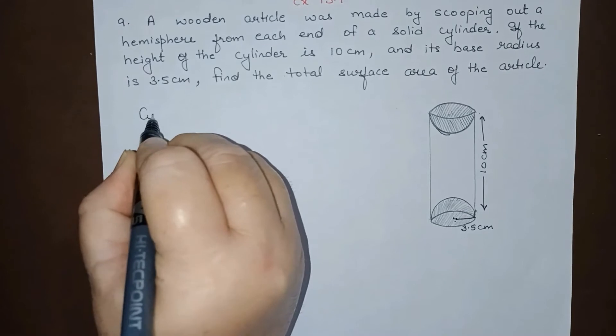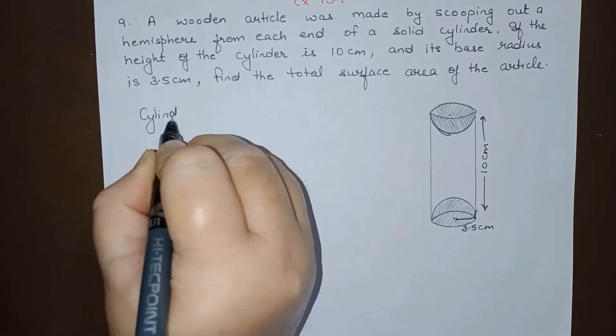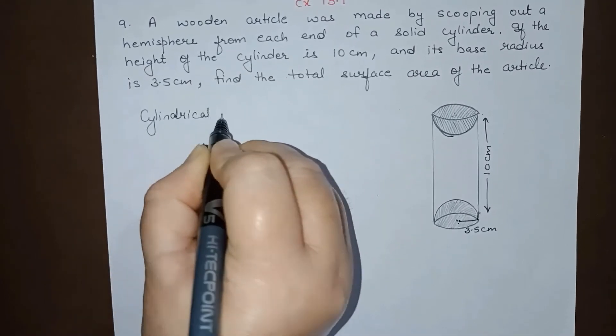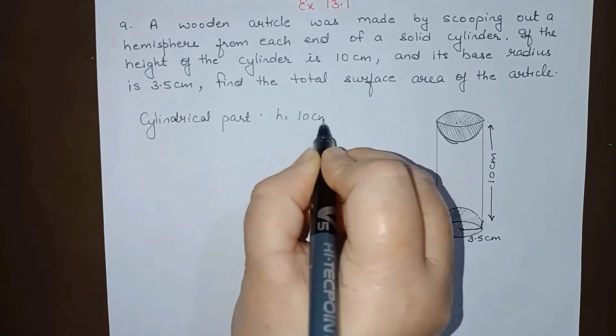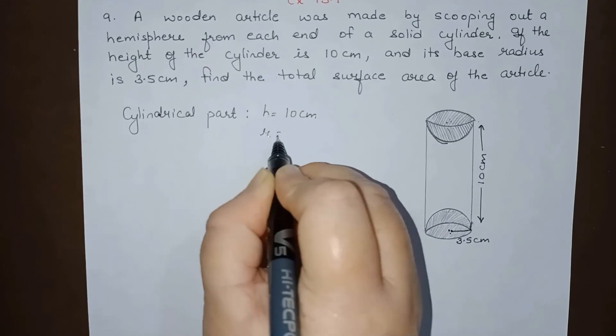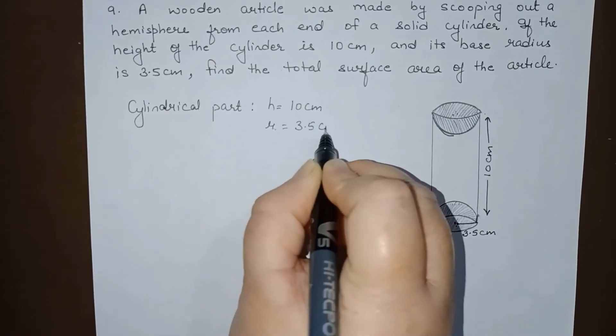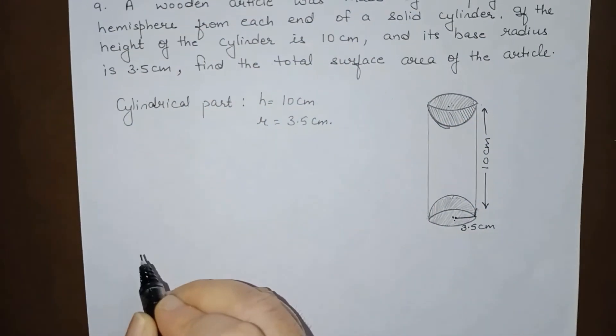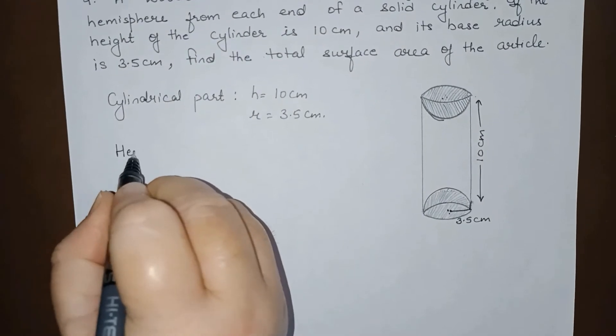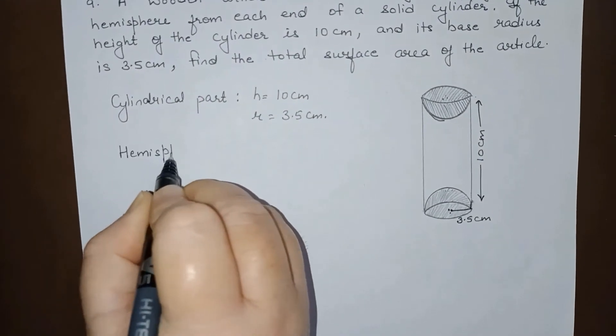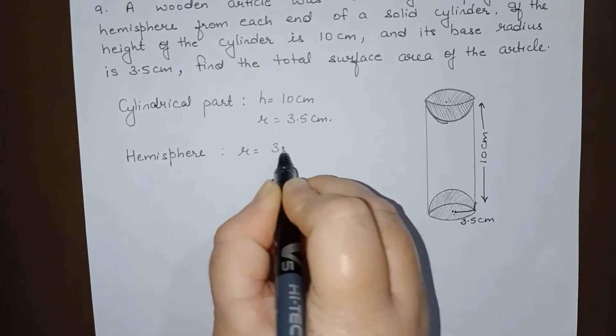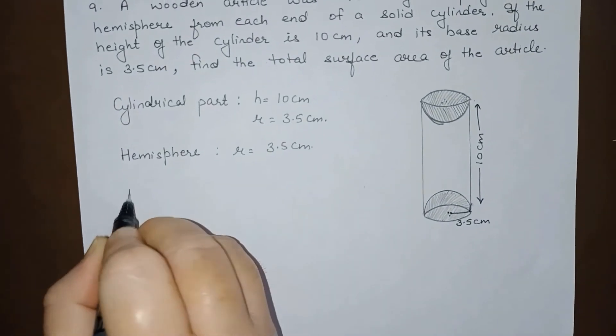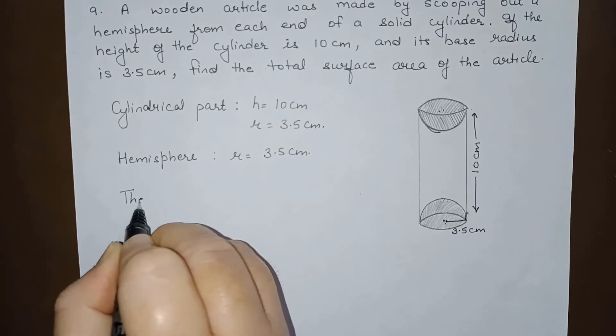So here, for cylindrical part, we have h equals 10 centimeters—it is given. Radius equals 3.5 centimeters—it is also given. For hemisphere, we have r equals 3.5 centimeters.